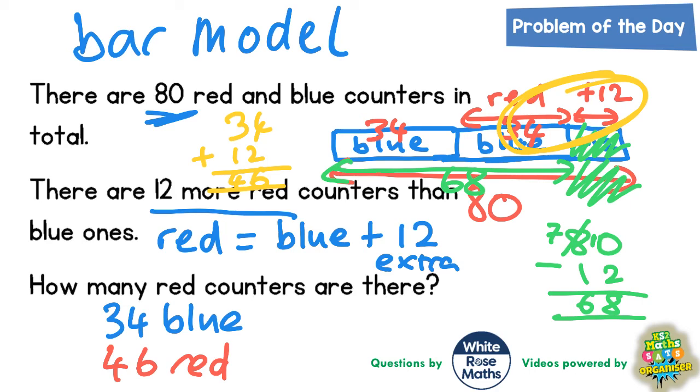As a final check we should double check that it fits with everything it says. The clues say that there are 80 red and blue counters in total. Well does 34 and 46 add up to 80? Let's just double check. 34 and 46.